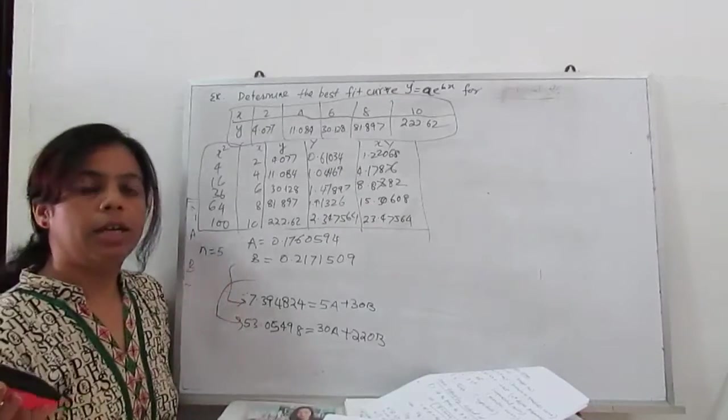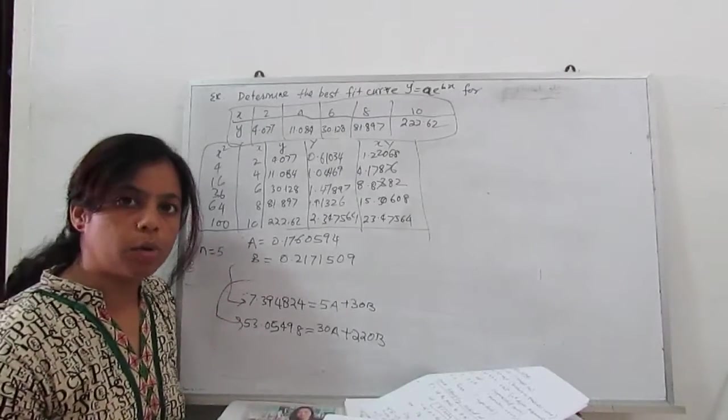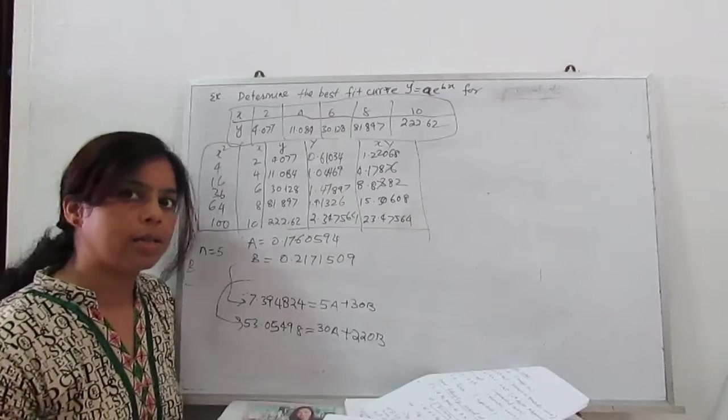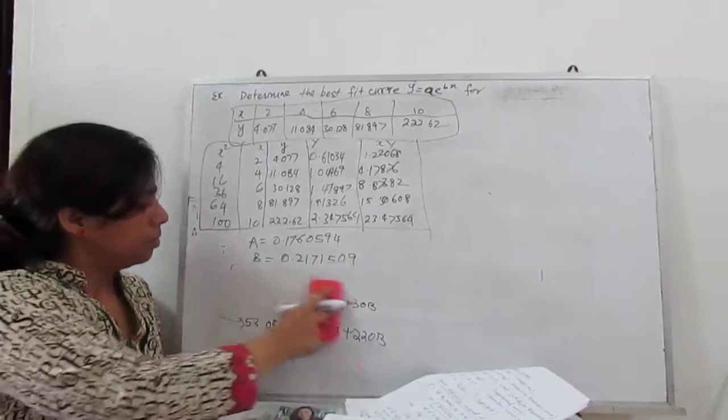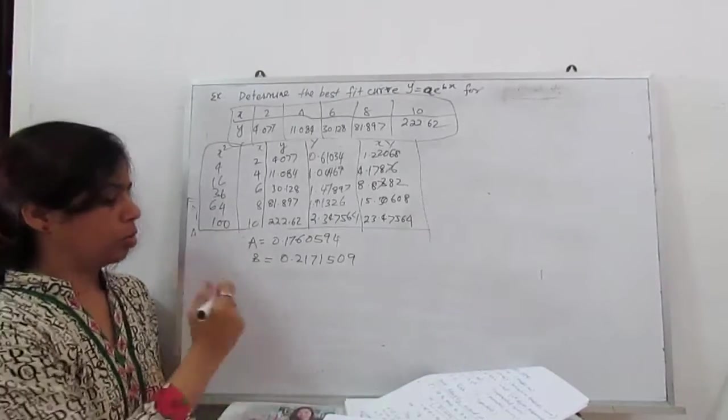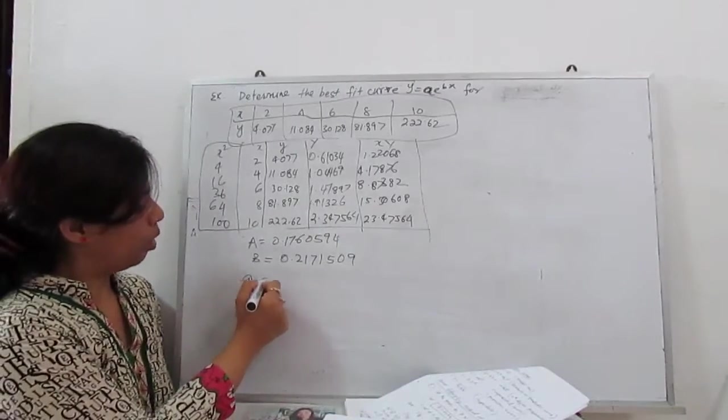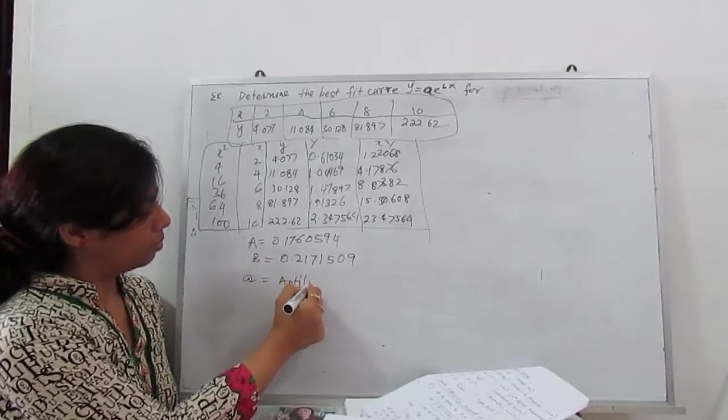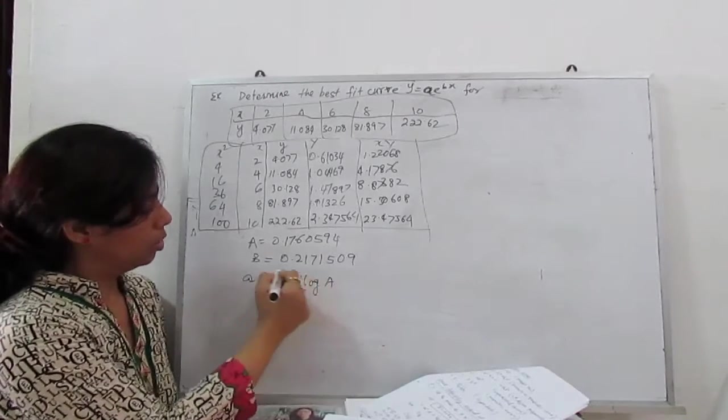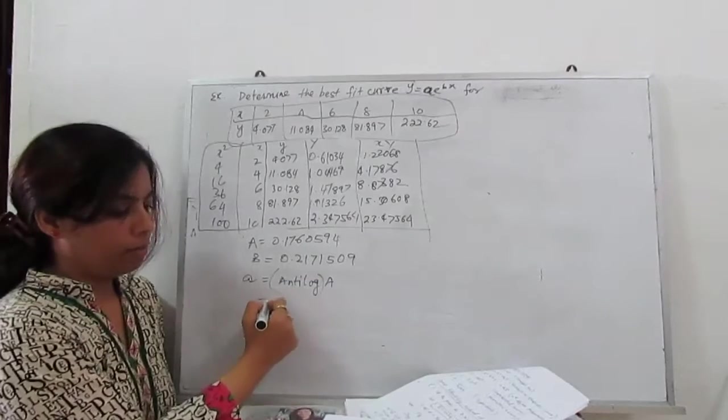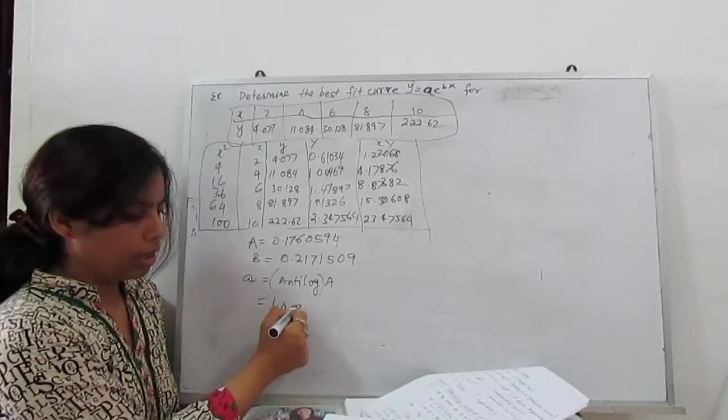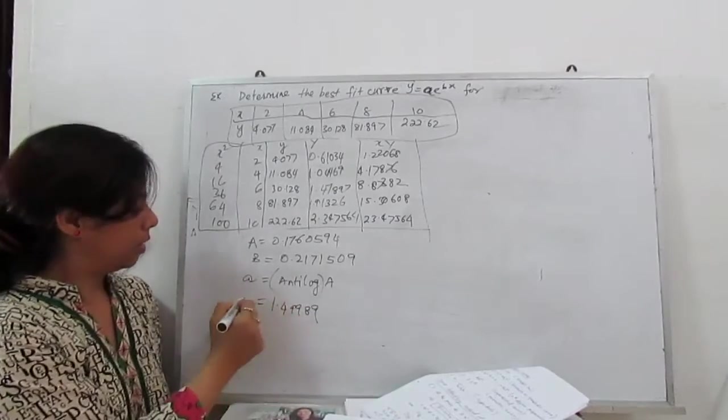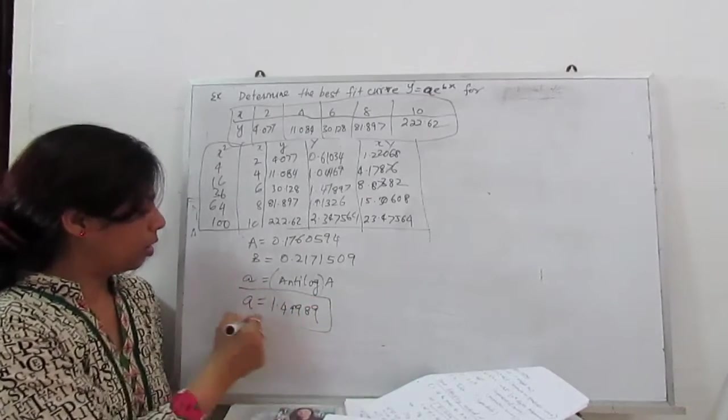Next, we need our original constant. Our original constants are small a, small b. So taking antilog. So small a is antilog of A, antilog of A given by 1.49989. This is our real constant.